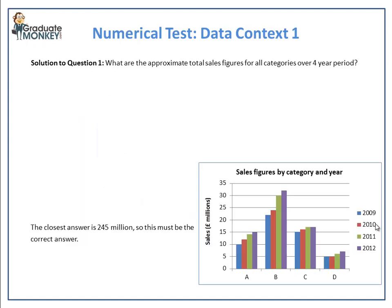The task is simple — you just need to add up all the bars to arrive at the answer. However, there are 16 numbers to sum up and you don't have the time to enter a string of 16 numbers into your calculator. Besides, the question is asking for an approximate answer only.